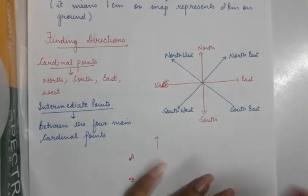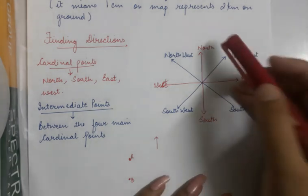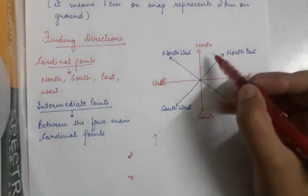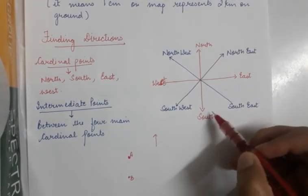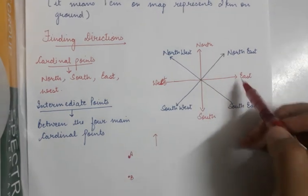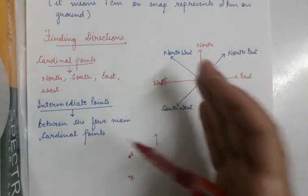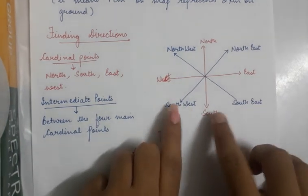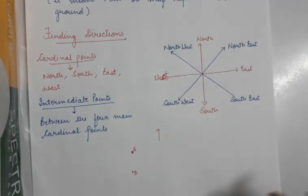One important point to keep in mind is that you have to name the intermediate direction starting with north or south first. So it is northeast, northwest — north stands first before east or west. Similarly, it is southwest, southeast — south comes before. So keep all these things in mind.